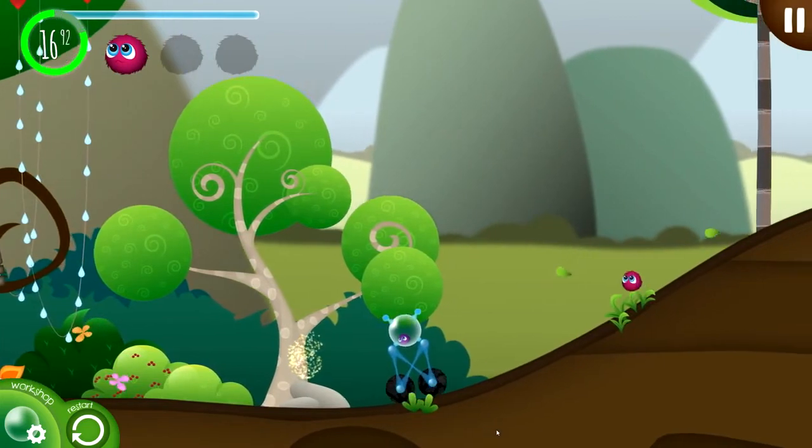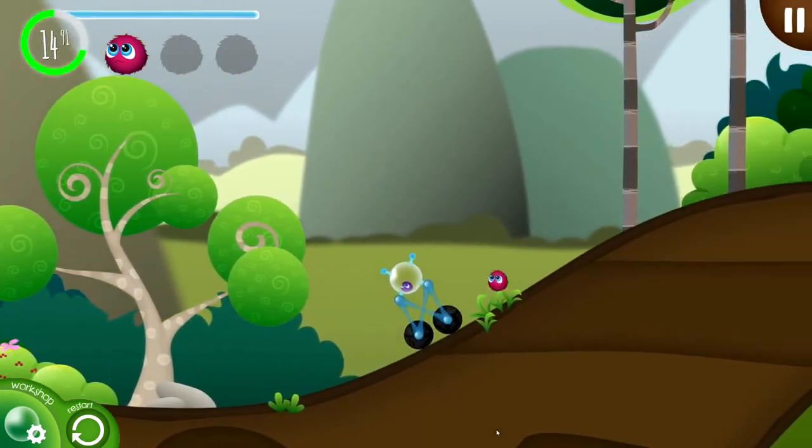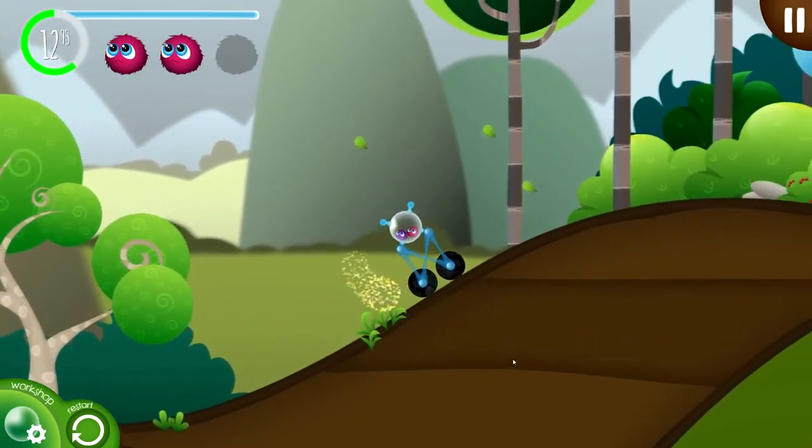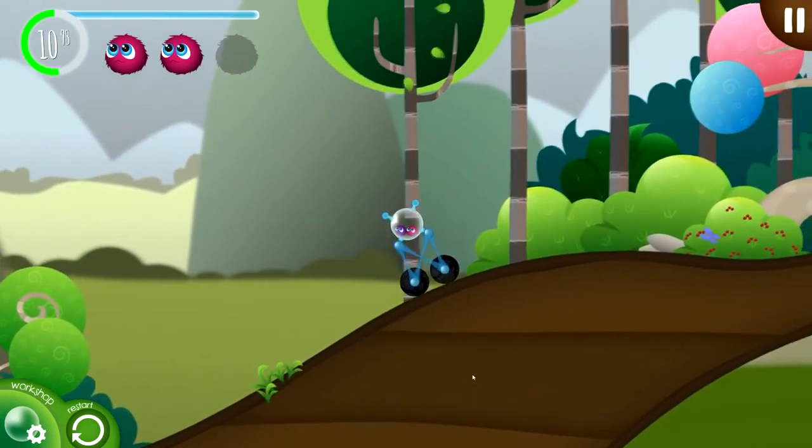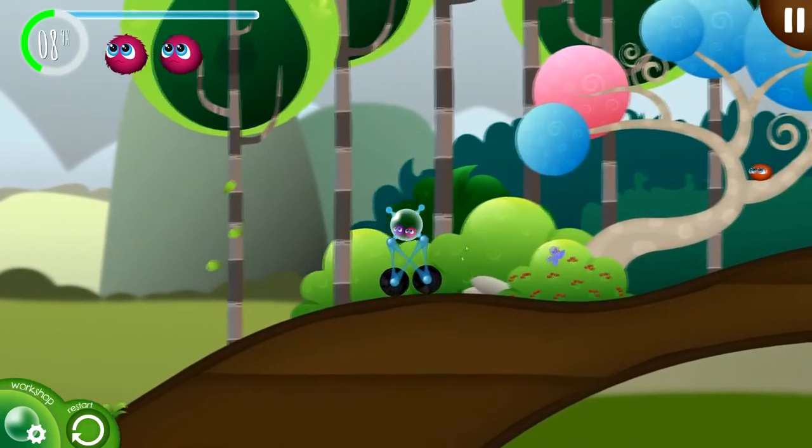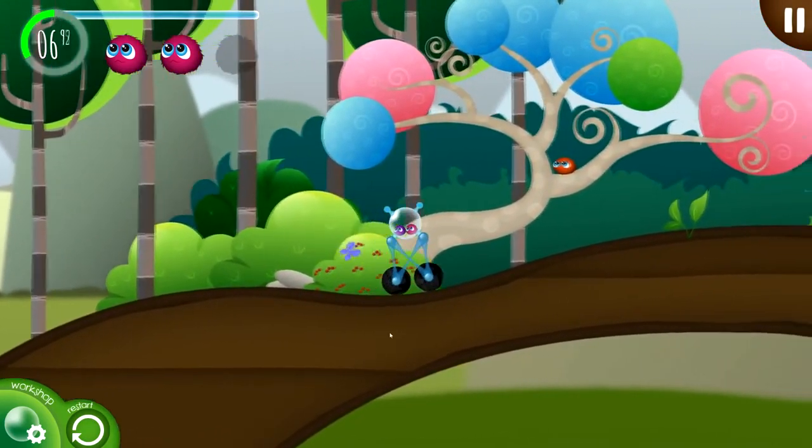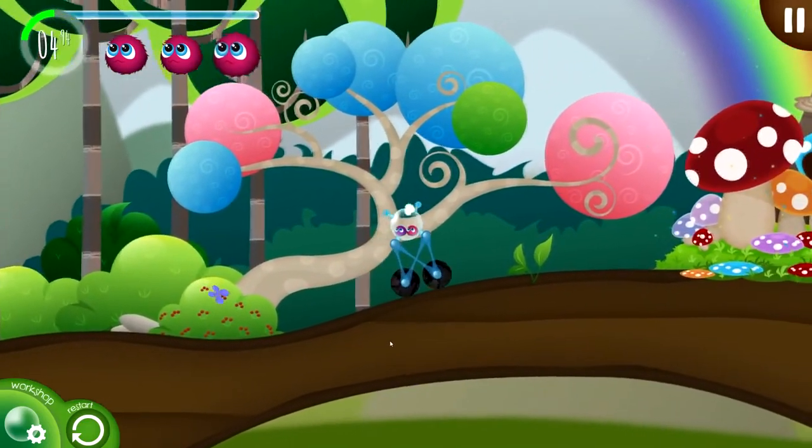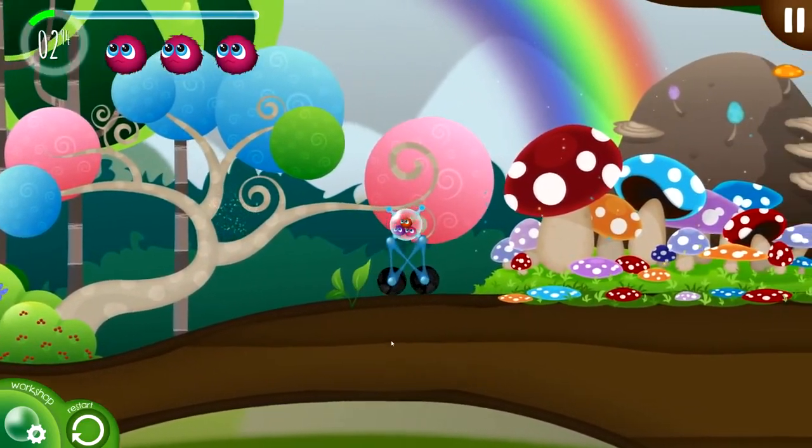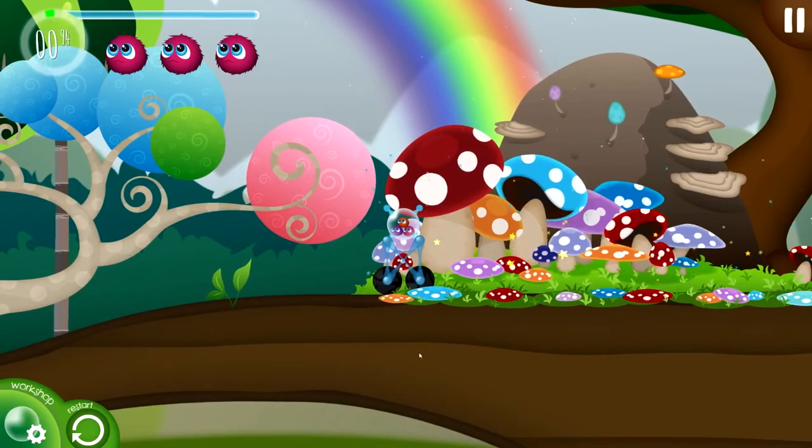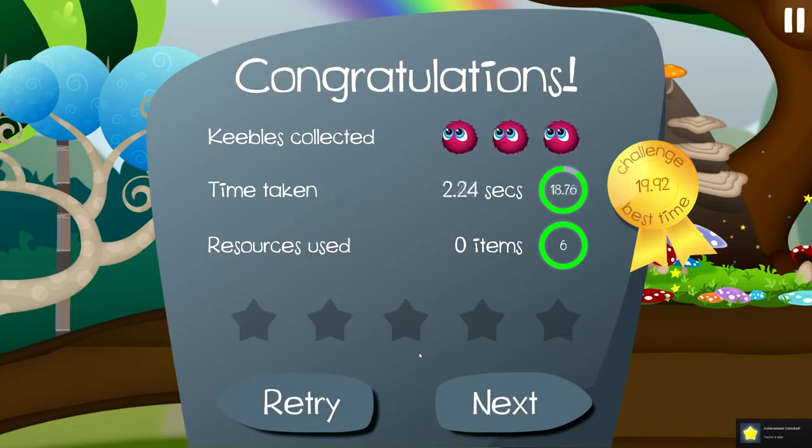One thing that you need to keep an eye on when you're building these vehicles is balancing them. In this case, the slope isn't too steep, so it won't make the vehicle fall over. As you can see, the vehicle is tall enough, and now we've got all three Keebles to the finish zone. And there we go. There's a five-star result in Keebles.